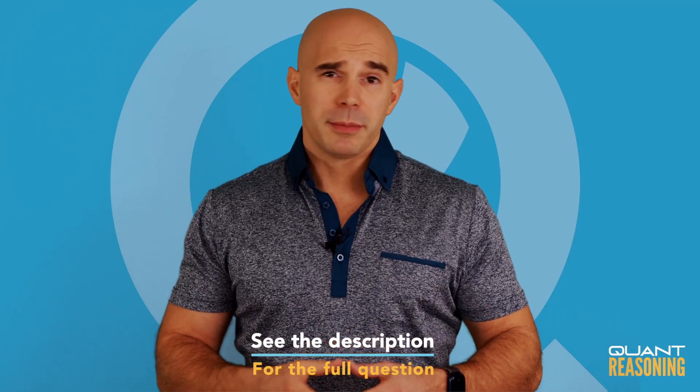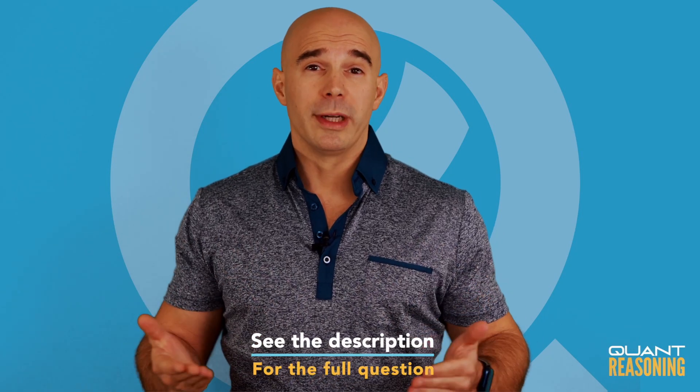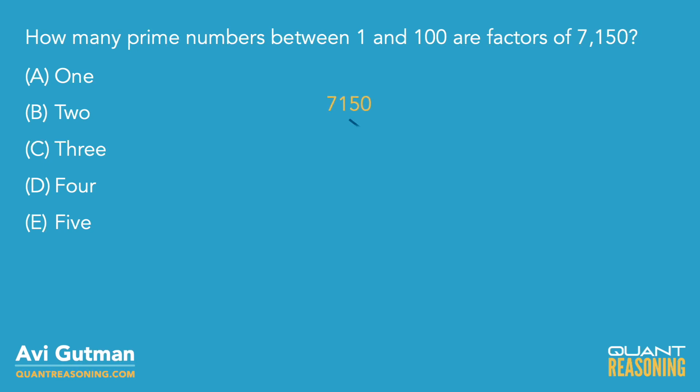If we know how to find the prime factorization of a number, this question is pretty straightforward. We have the number 7,150. Right away, I'm going to break that into 715 times 10.